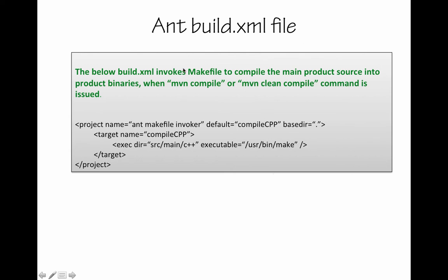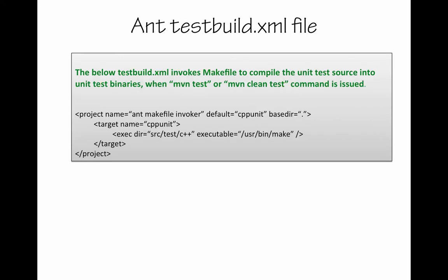This is the Ant build.xml which compiles your main production code. This is the path of your make utility, and this is the path of your makefile — source/main/C++. Under that directory there is a makefile, and when you issue make, it will look for that makefile under that project directory. Similarly, when you issue maven test or maven clean test, the make utility is going to look for a makefile under source/test/C++, which triggers that makefile and compiles the test project.